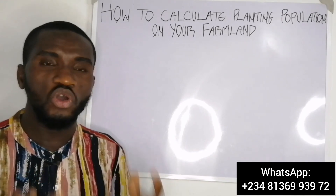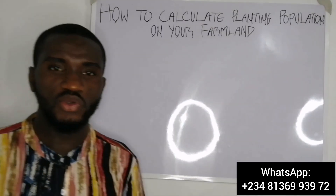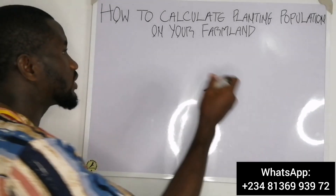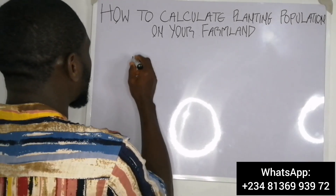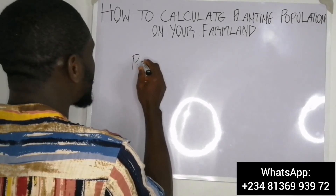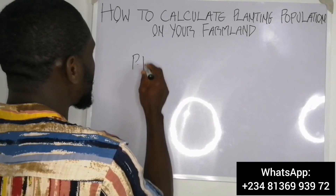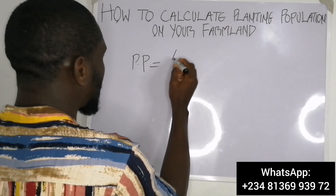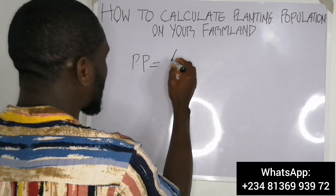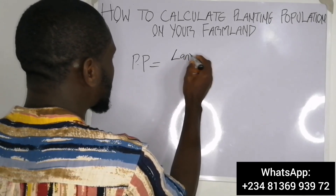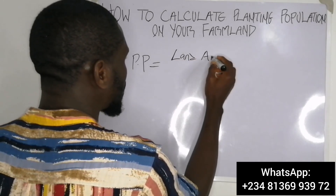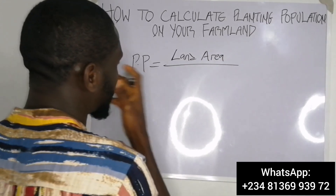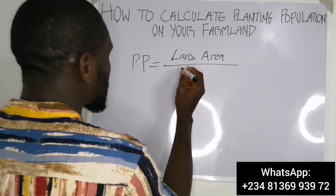It will also help you know the quantity of other farm inputs like chemicals, herbicides, and pesticides you'll be needing on your farm. So let's get to it. The formula for calculating planting population — represented as PP — equals land area divided by spacing.